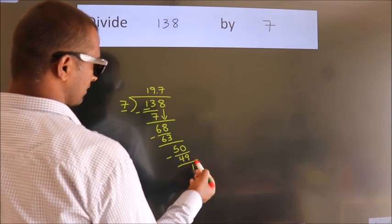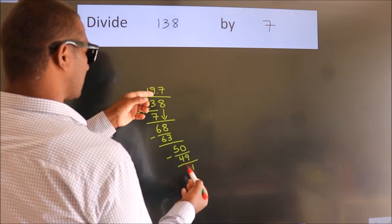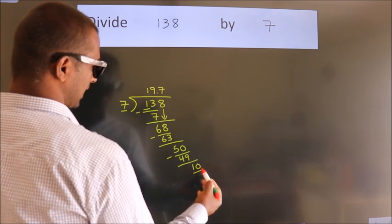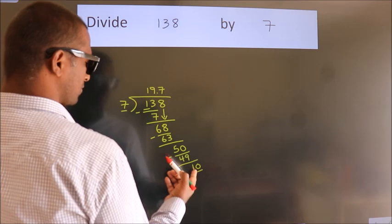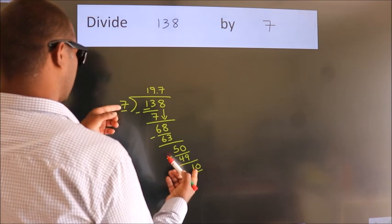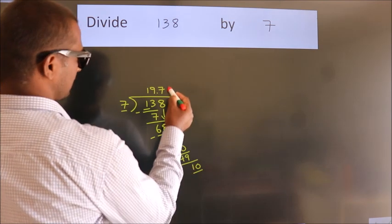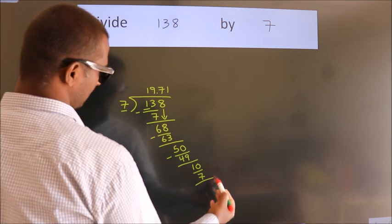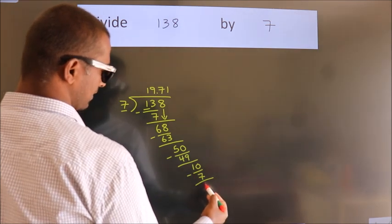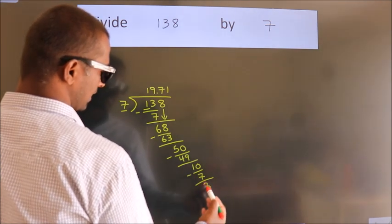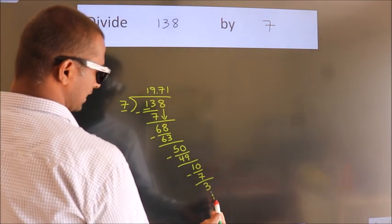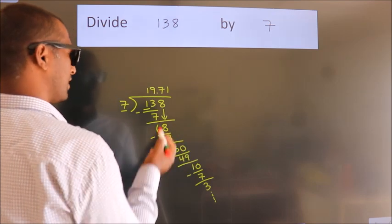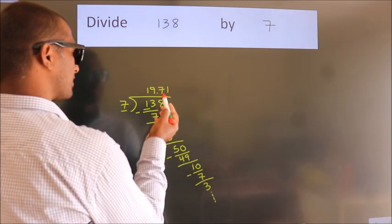After this, we already have the decimal, so directly take 0, giving us 10. A number close to 10 in the 7 times table is 7 ones, 7. Now we subtract and we get 3. The division continues, but it is enough if we do up to 2 decimal places.